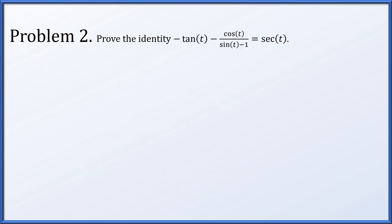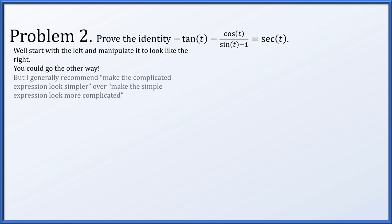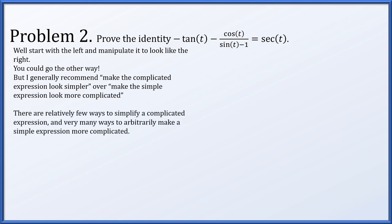In problem two, let's establish the identity: negative tangent of t minus cosine of t over sine t minus 1 is equal to secant of t. Again we're going to start with the left and manipulate it to look like the right side. In this problem I really wouldn't recommend going the other way. Generally, find what looks more complicated and make it look simple. If you have a complicated expression there are relatively few ways to simplify it, but if you have something simple there are innumerable ways to make it more complicated, so it's usually easier to find the correct next step when you have fewer choices.